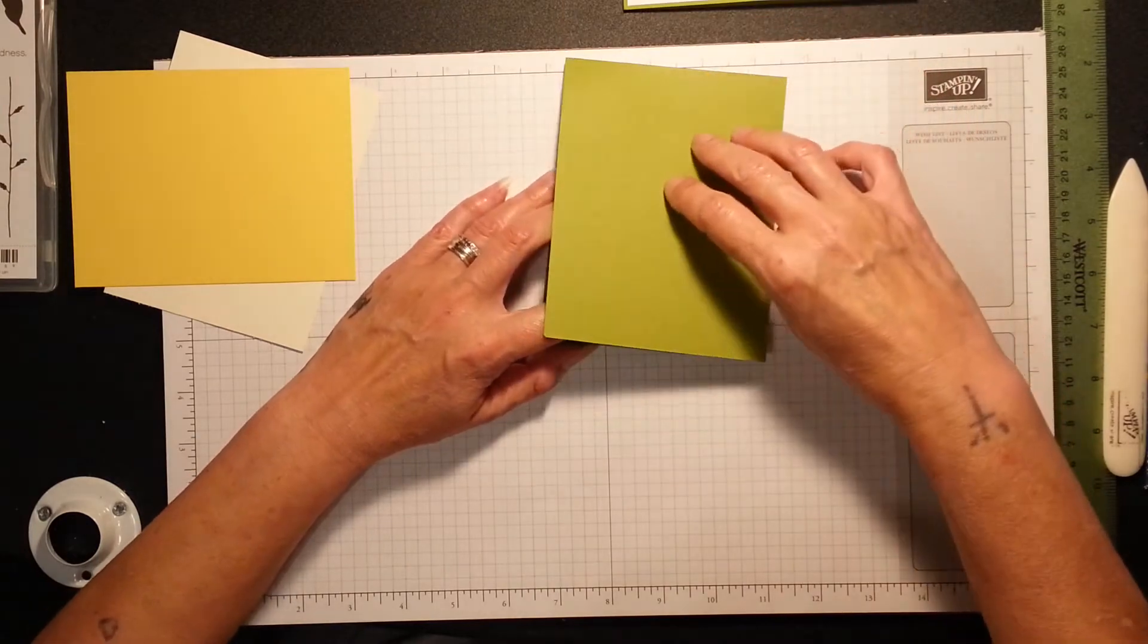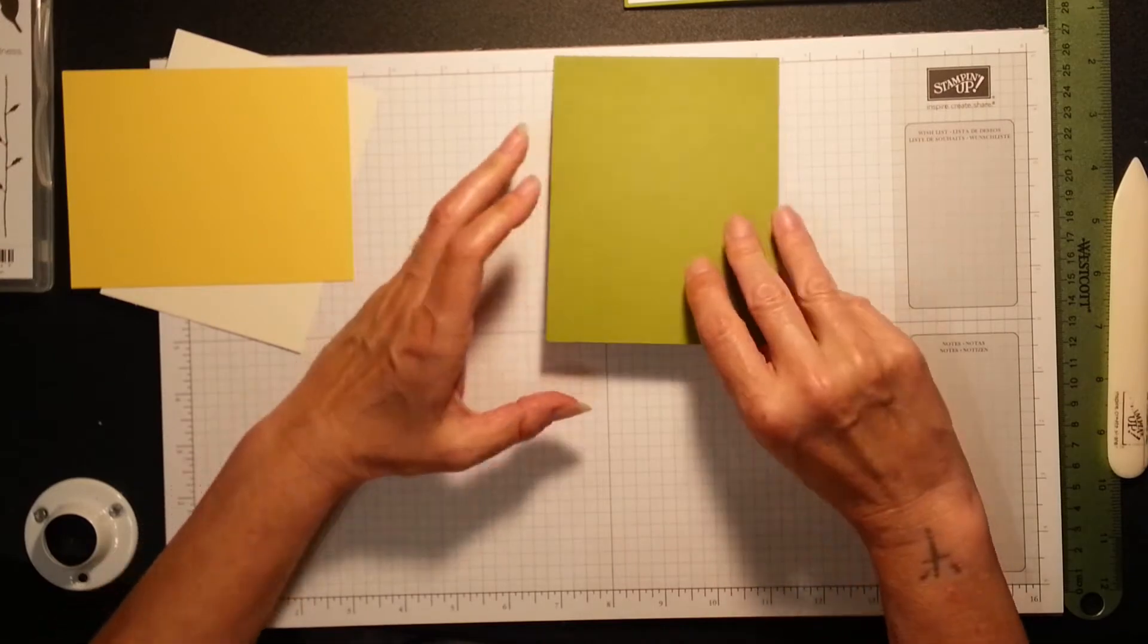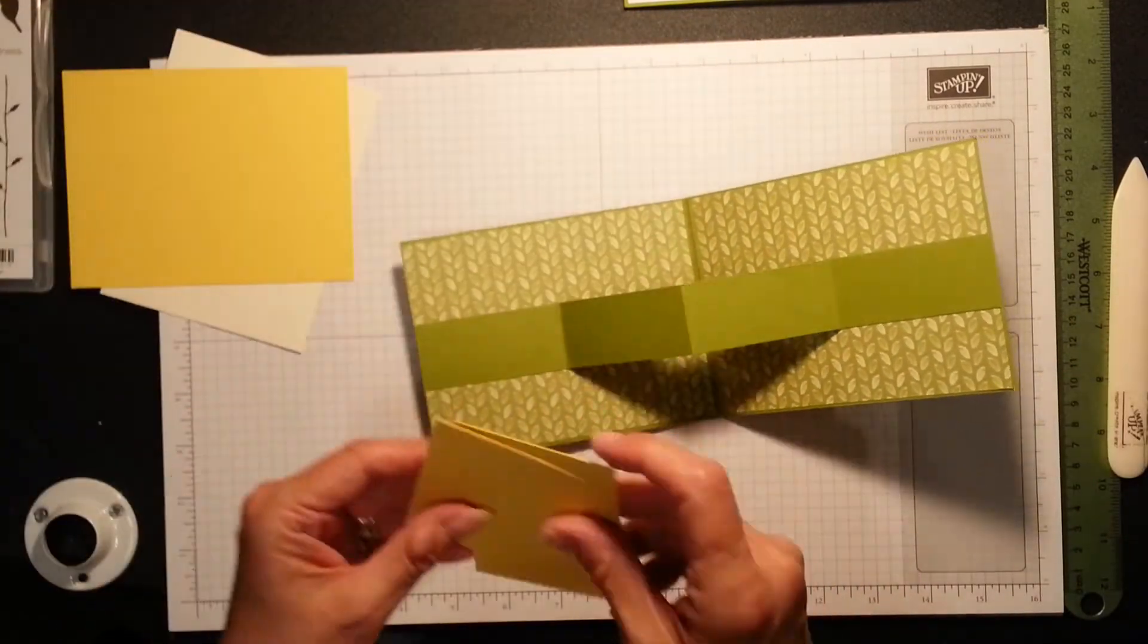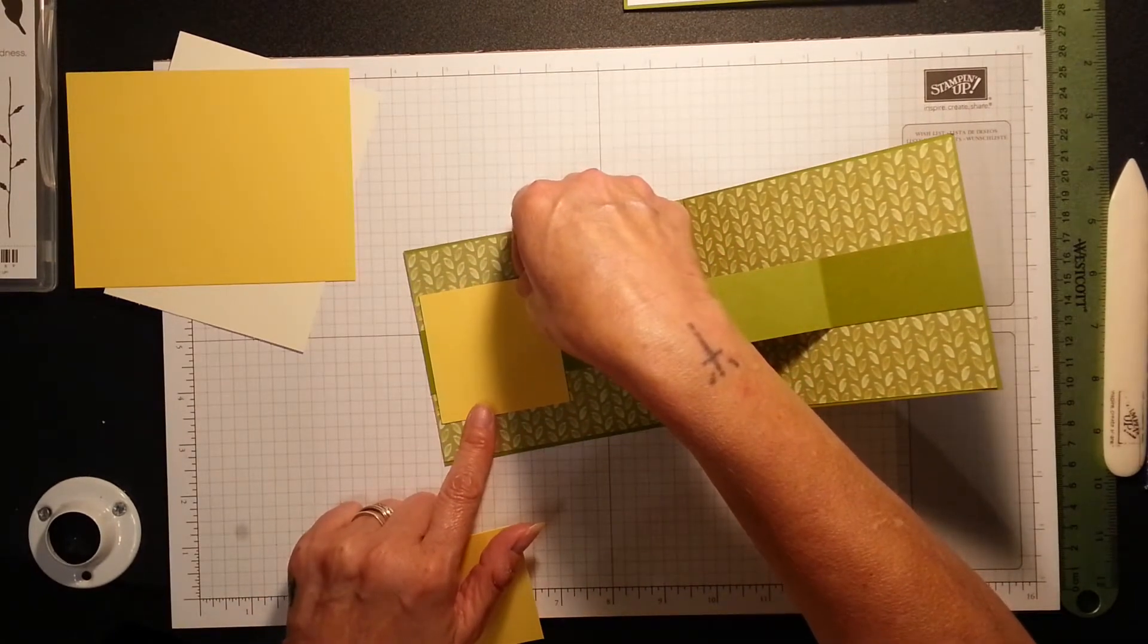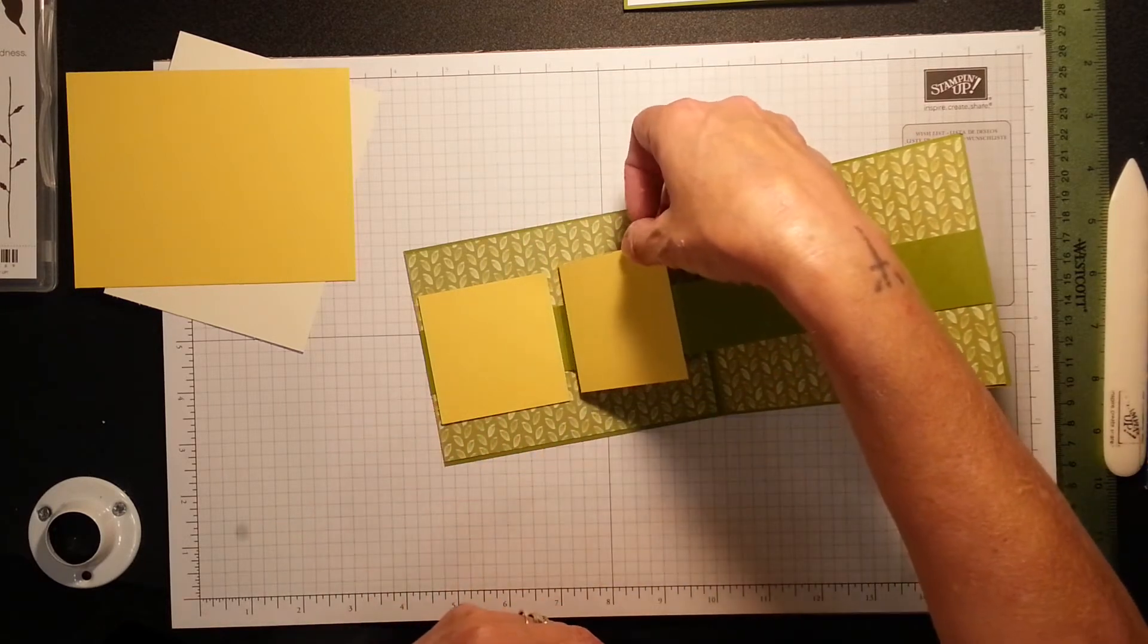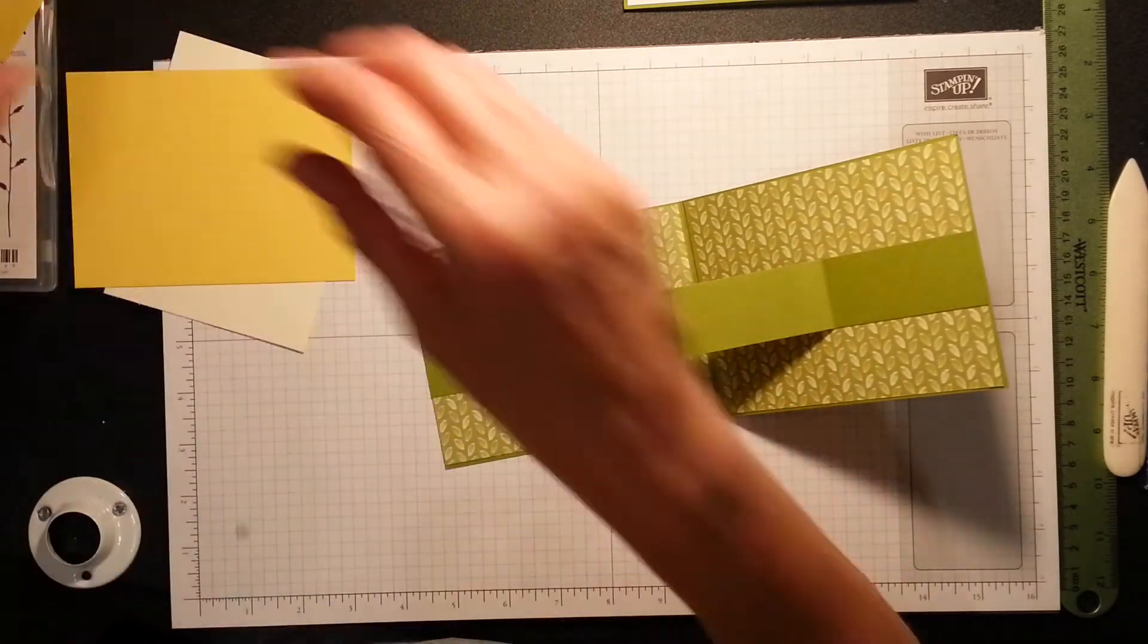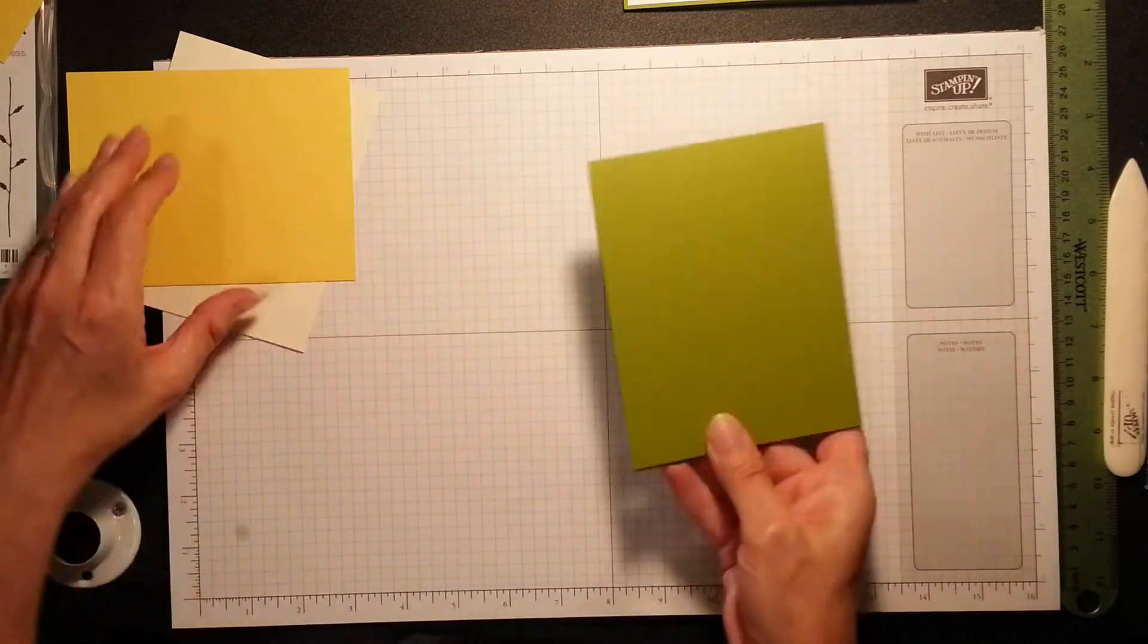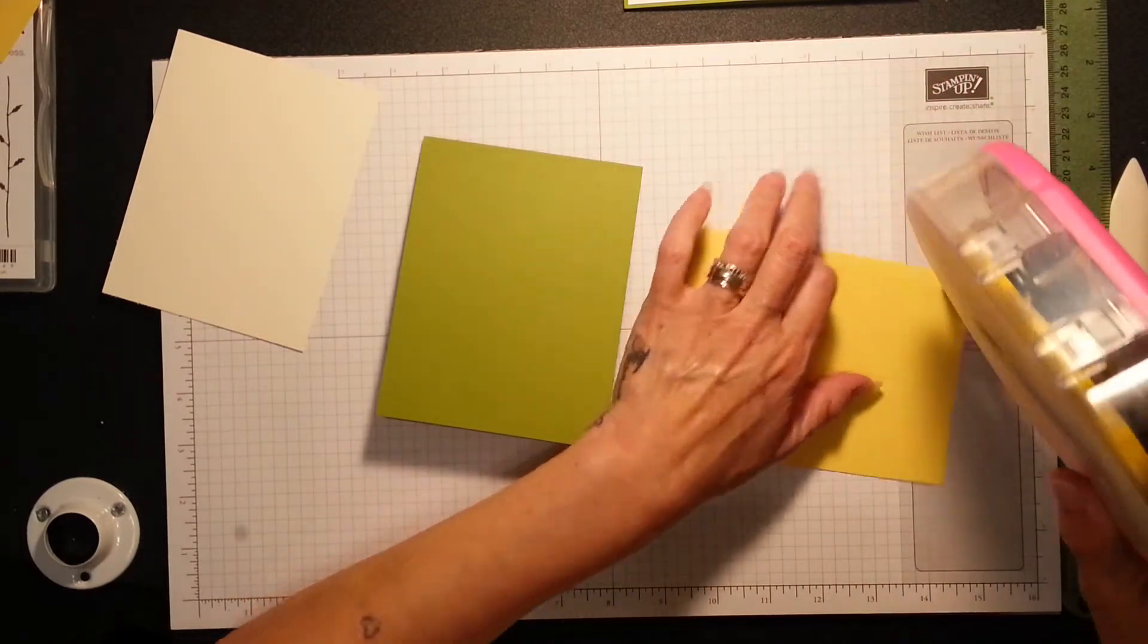Now with our Z fold, we're going to glue these two ends but I only glue one first, making sure it's nice and leveled and my folds are crisp.